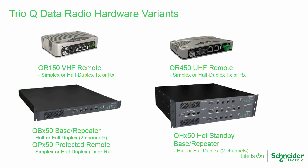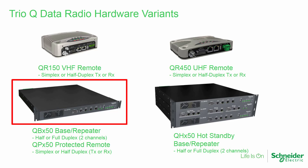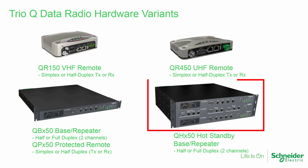Before we begin, here is a reminder of the variants of the QData radio. The QR150 and QR450 remote type radios are configured identically except for the frequency ranges, and are typically used at remote sites. The QB150 and QB450 are 19-inch rack-mountable units suitable for full-duplex master or repeater locations. The QP150 and QP450 are physically similar to the QB, but contain two QRs for a protected or hot standby link. The QH consists of a pair of QBs and a hot standby controller.